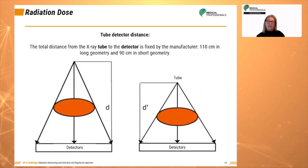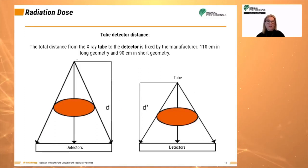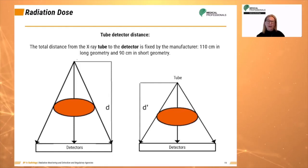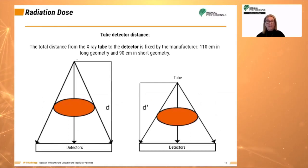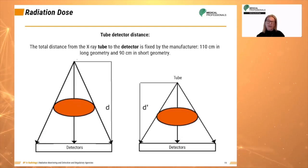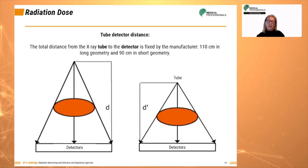The total distance from the x-ray tube to the detector is fixed by the manufacturer: 110 centimeters in long geometry and 90 centimeters in short geometry. It requires a higher MA value in long geometry since the dose is inversely proportional to the square of the tube-detector distance. Future CT generations are designed with short tube-detector distances to reduce patient radiation dose.